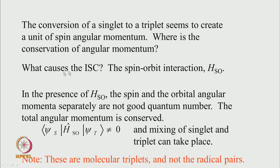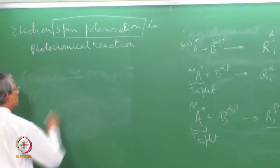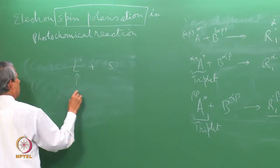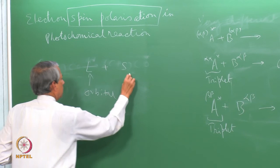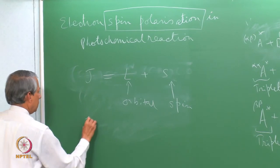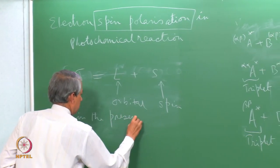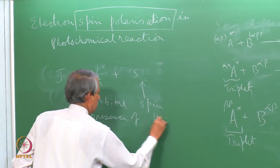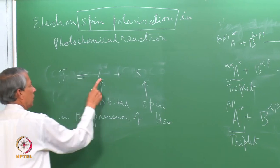To understand this, we examine what causes the inter-system crossing process. The perturbation is the spin-orbit interaction H_SO. In the presence of spin-orbit interaction, spin angular momentum S and orbital angular momentum L separately are not good quantum numbers — only the total angular momentum J = L + S is conserved. This gives a clue: when inter-system crossing takes place in the presence of this perturbation, the rate from singlet to triplet may not be the same for all three triplet sub-levels T+1, T0, and T−1.